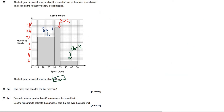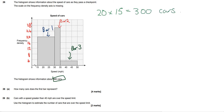We've worked out the scale on the y-axis. Back to the question: how many cars does the first bar represent? If you remember, it was 5x times 15. We now know that x is 4. So we just need to work out the area of this rectangle: 20 times 15, which equals 300. So the answer to part A is 300 cars.